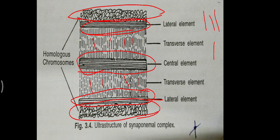The lateral elements are attached to homologous chromosomes, as we can see here. The synaptonemal complex is considered to be associated with the pairing of homologous chromosomes and recombination — meaning it is taking part in or associated with these processes.